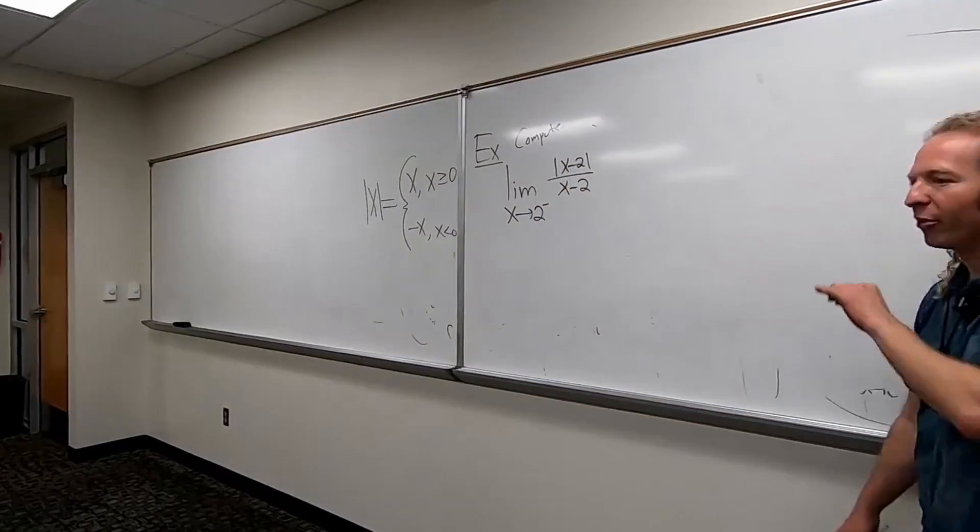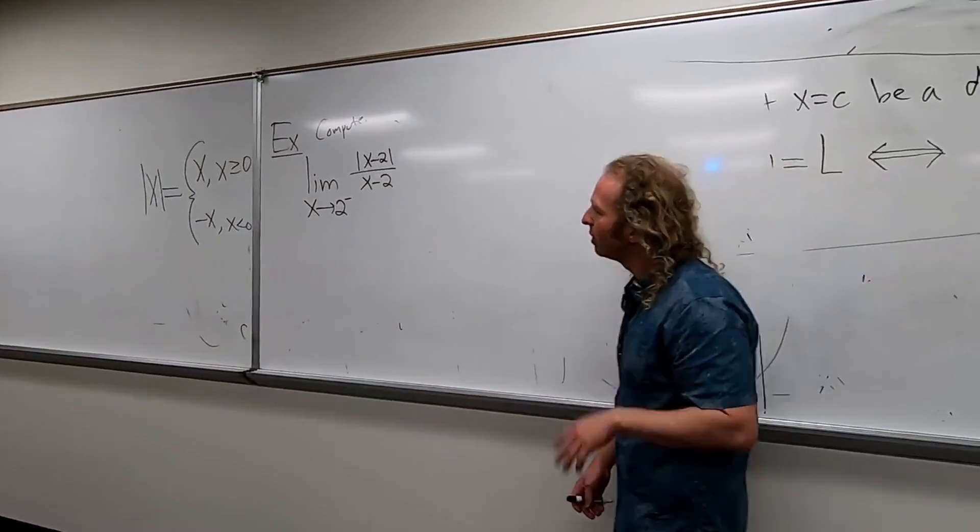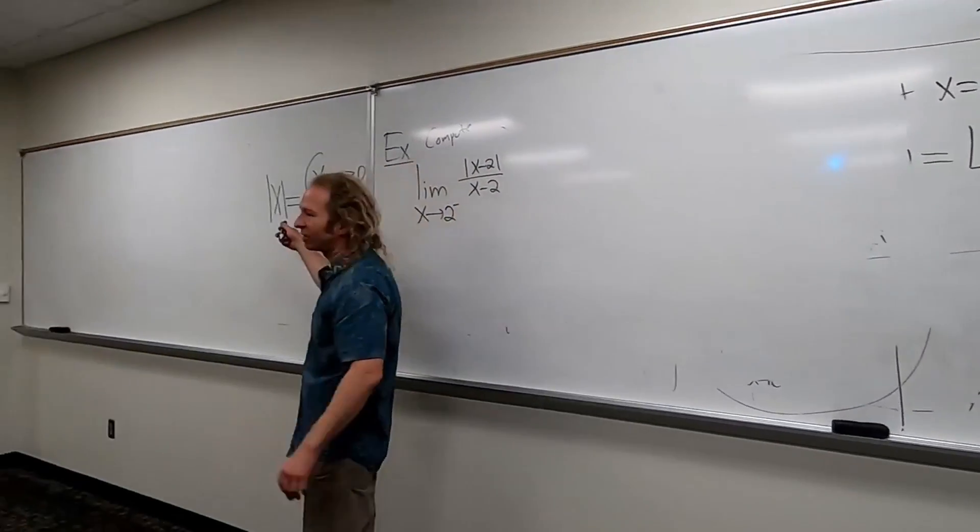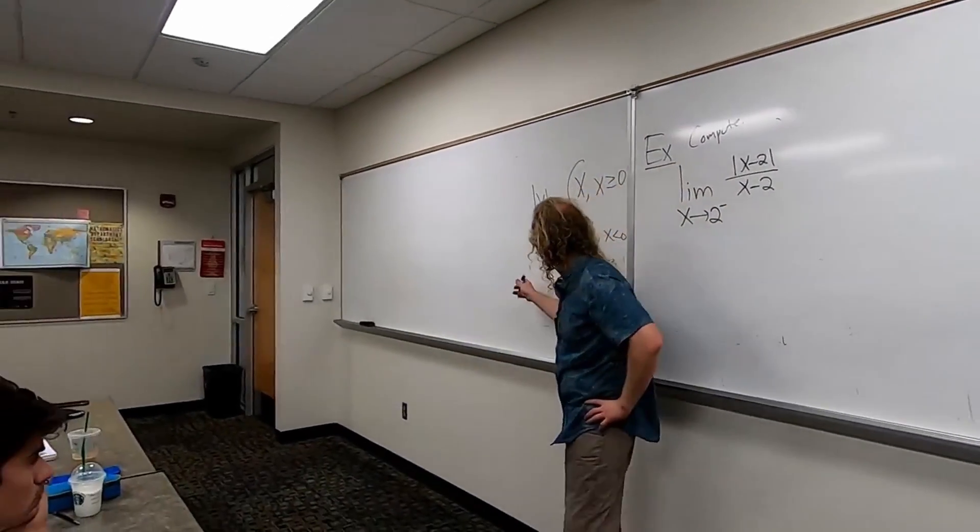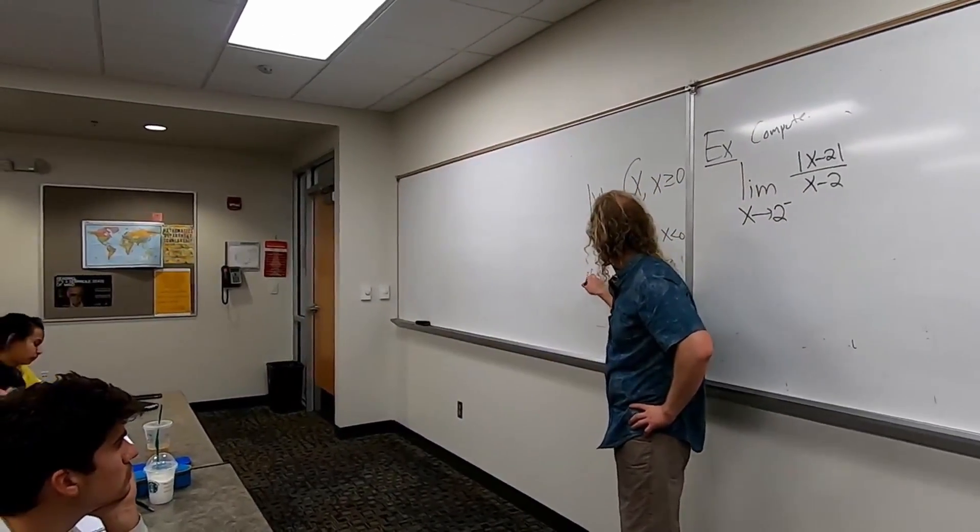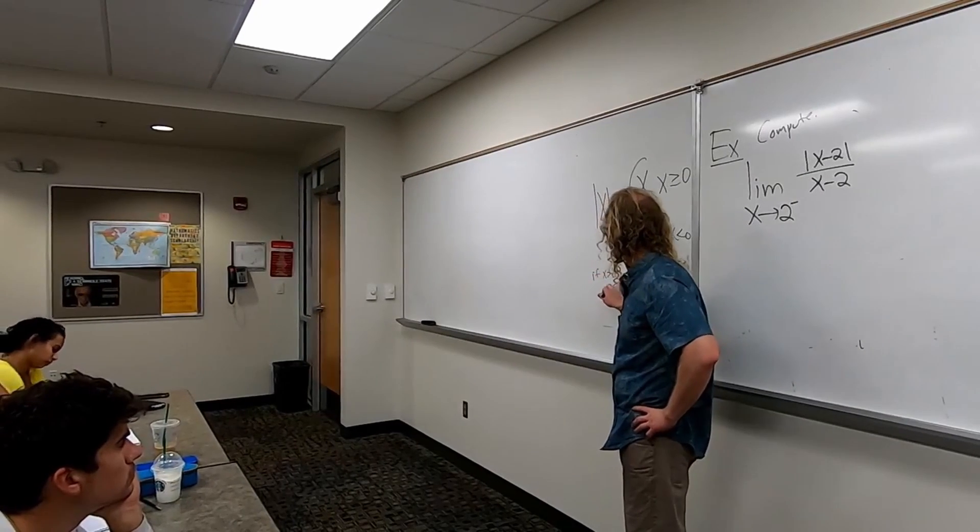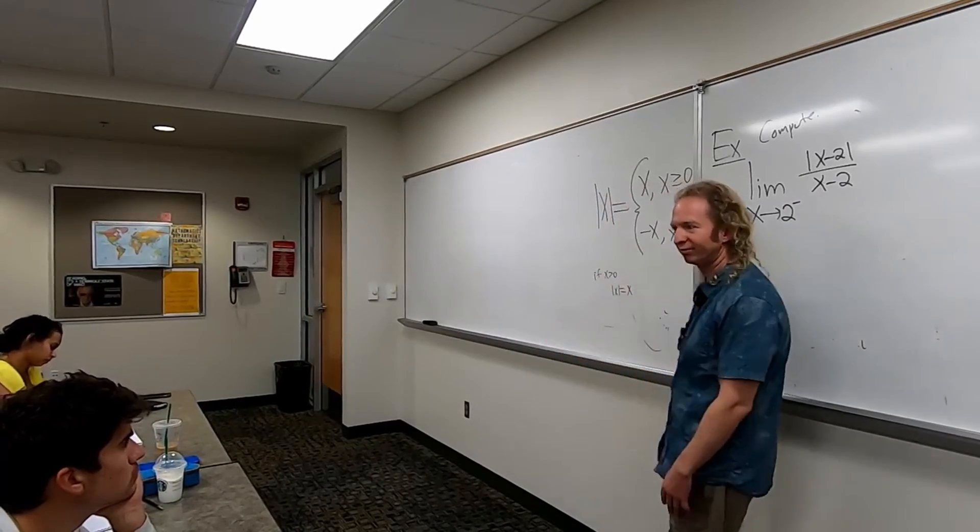So we have to strategically get rid of the absolute value in this problem. So this is the absolute value of x, right? So you notice, so if x is positive, the absolute value of x is equal to x, right?